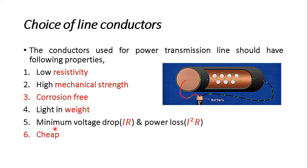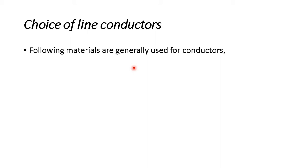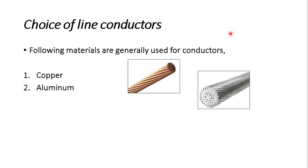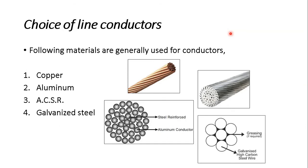The sixth property is that it should be cheap — the conductor should be as economical as possible. The seventh is it should be flexible. These are the properties a conductor should possess. In view of these requirements, the following materials are generally used: copper conductor, aluminum conductor, ACSR conductor, and galvanized steel.